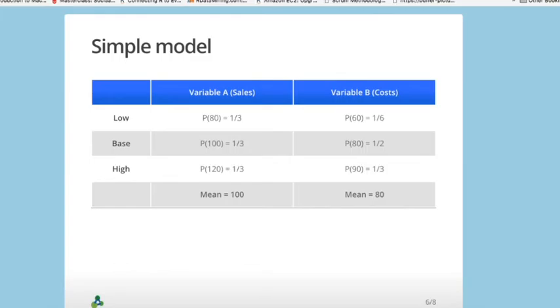We can see from the table why this is a simple model. There are only three states of the world: low, base, and high for each variable. The average, the expected value of sales is 100, and of the costs is 80.